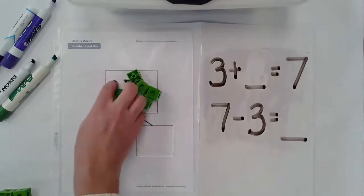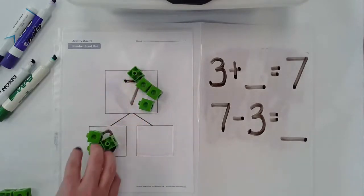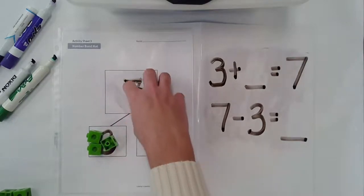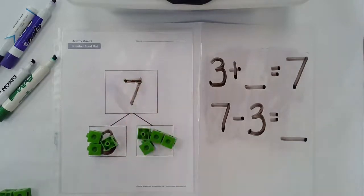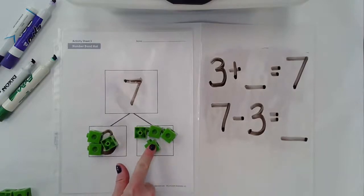So I have seven as my total. If I put three of my cubes here, how many will I have as my other addend? Let's count: one, two, three, four.